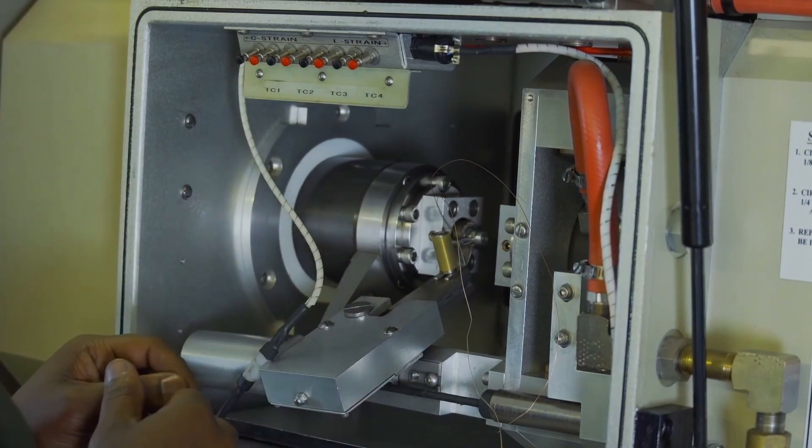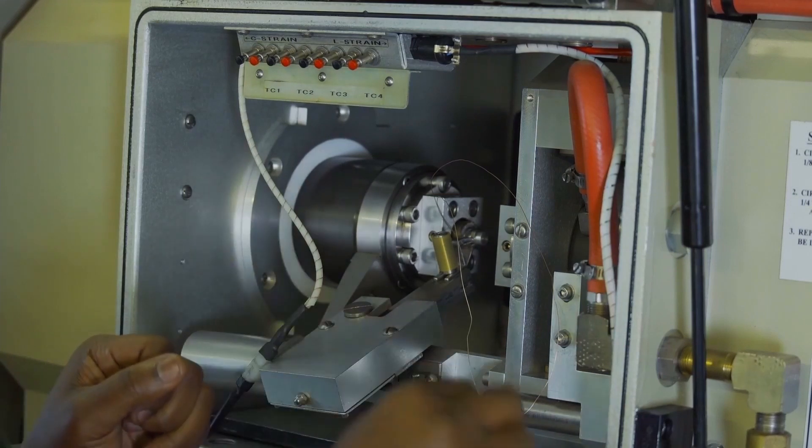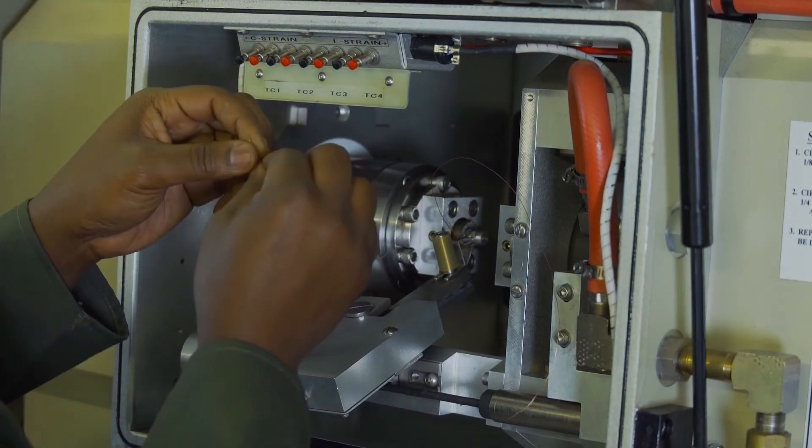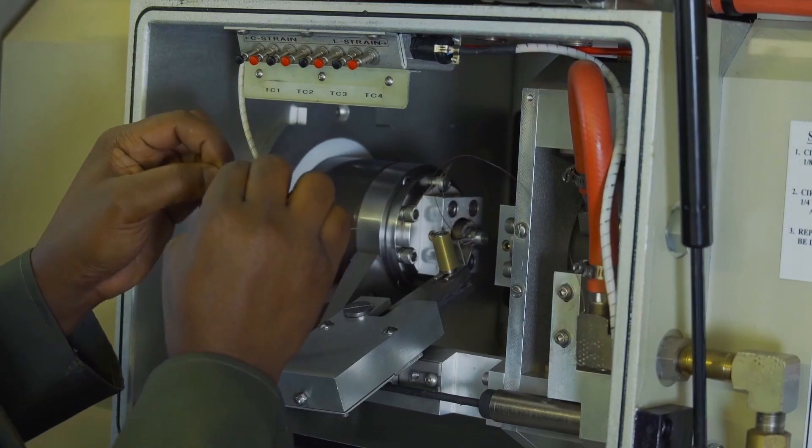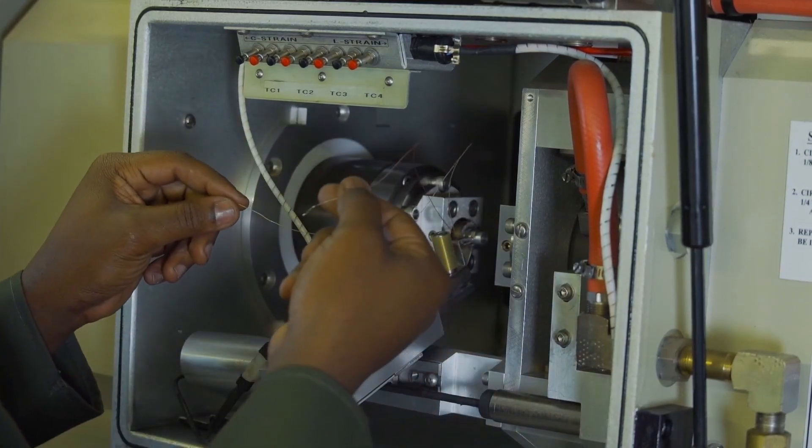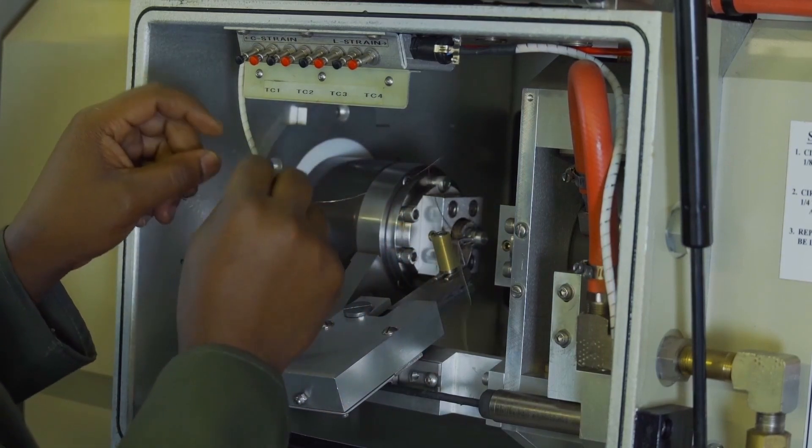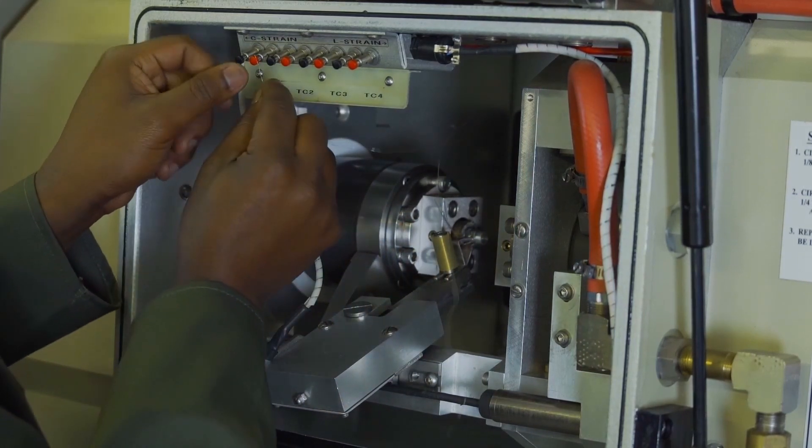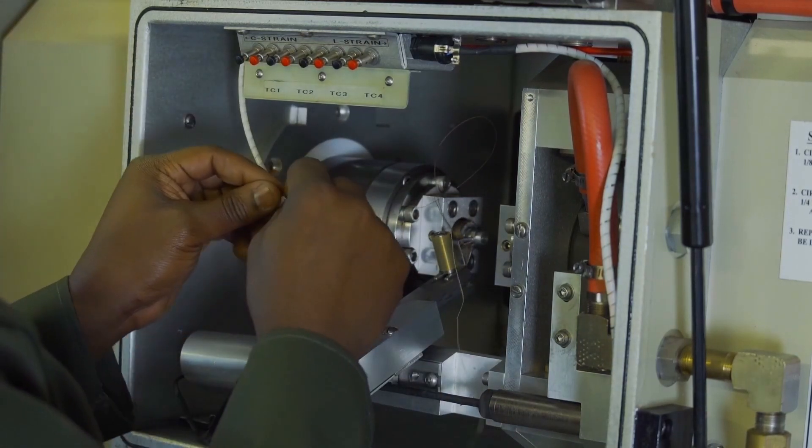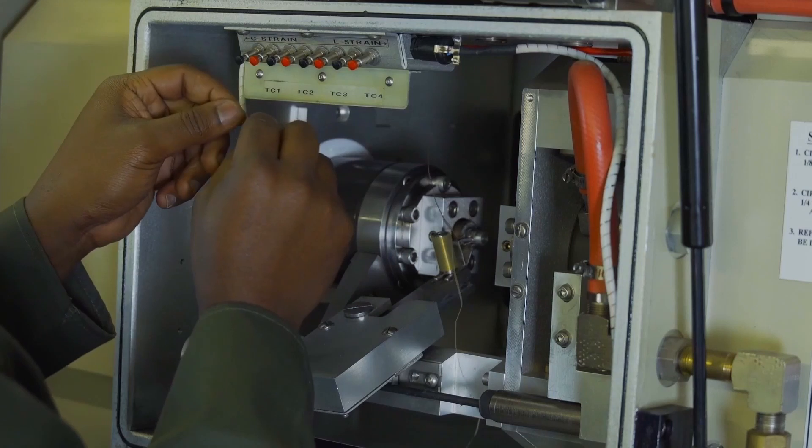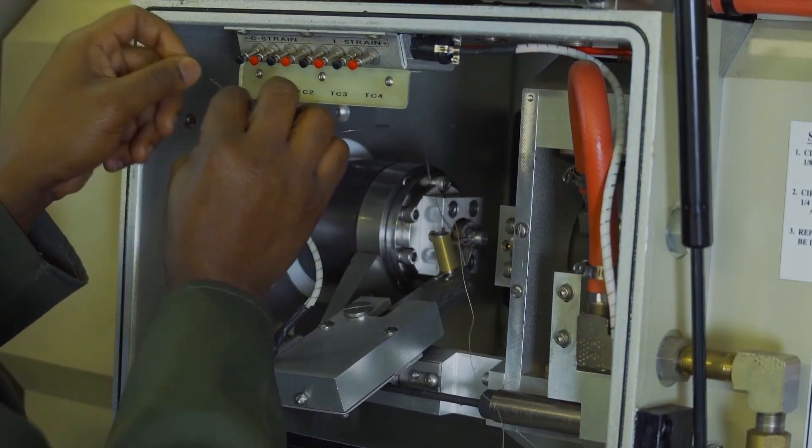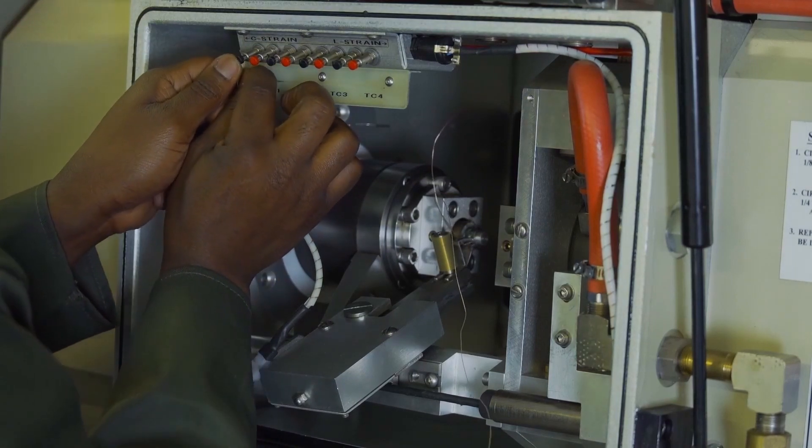Now we have our sample in place. We need to connect the thermocouple. There's something quite tricky here. If you look at this you have yellow and red. If you're not careful you would connect the red thermocouple to the red terminal and the yellow to the black. That is wrong. The correct way to do it on this machine is to connect the red thermocouple to the black terminal.